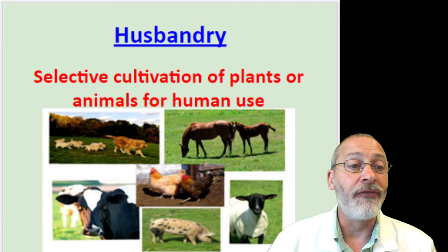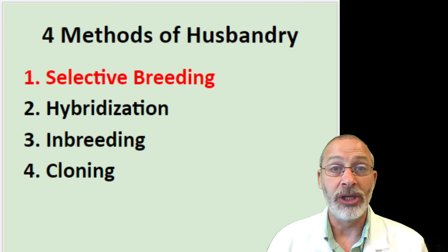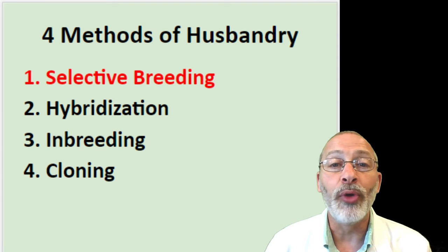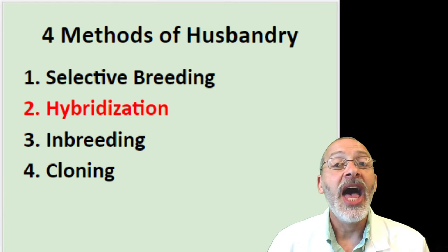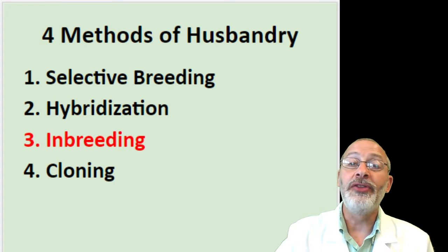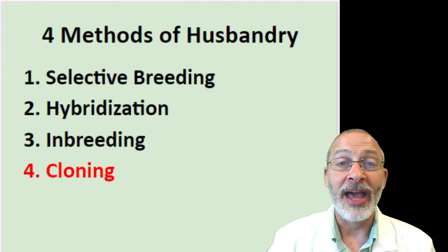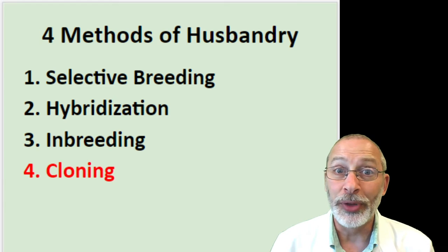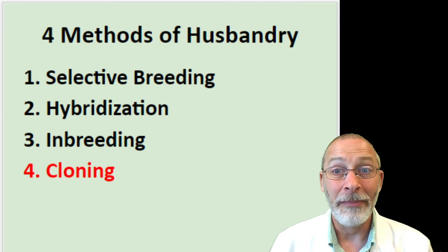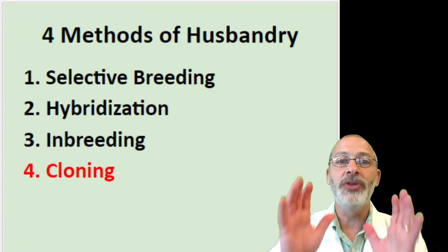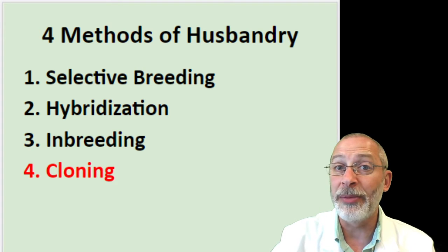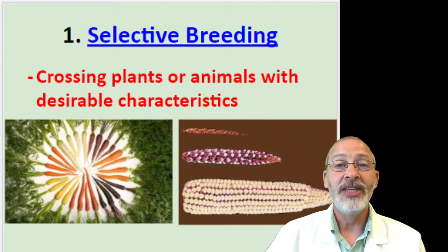Generally speaking, there are four methods of husbandry, and we're going to spend this week talking about all four. The first one is called selective breeding. The second one is hybridization. The third one is inbreeding. And finally, the fourth one is cloning. Based on some videos we saw previously and the topic we'll talk about next week, we might even add a fifth method — genetic engineering. But we'll save that for next week. Each of these different methods we're going to expand upon in more detail, starting with selective breeding.